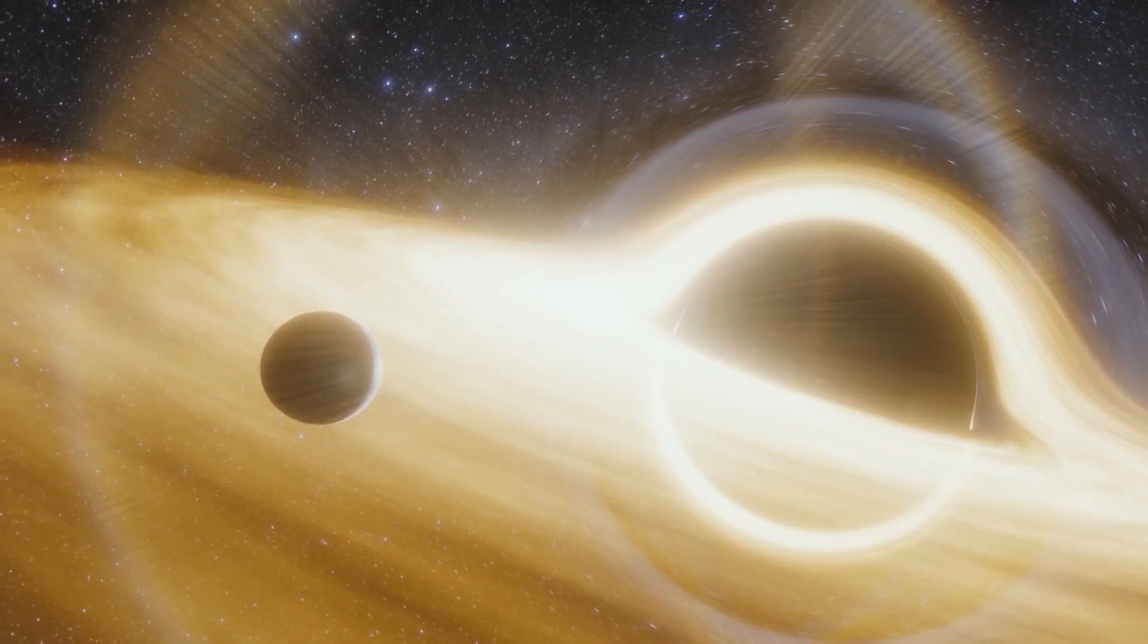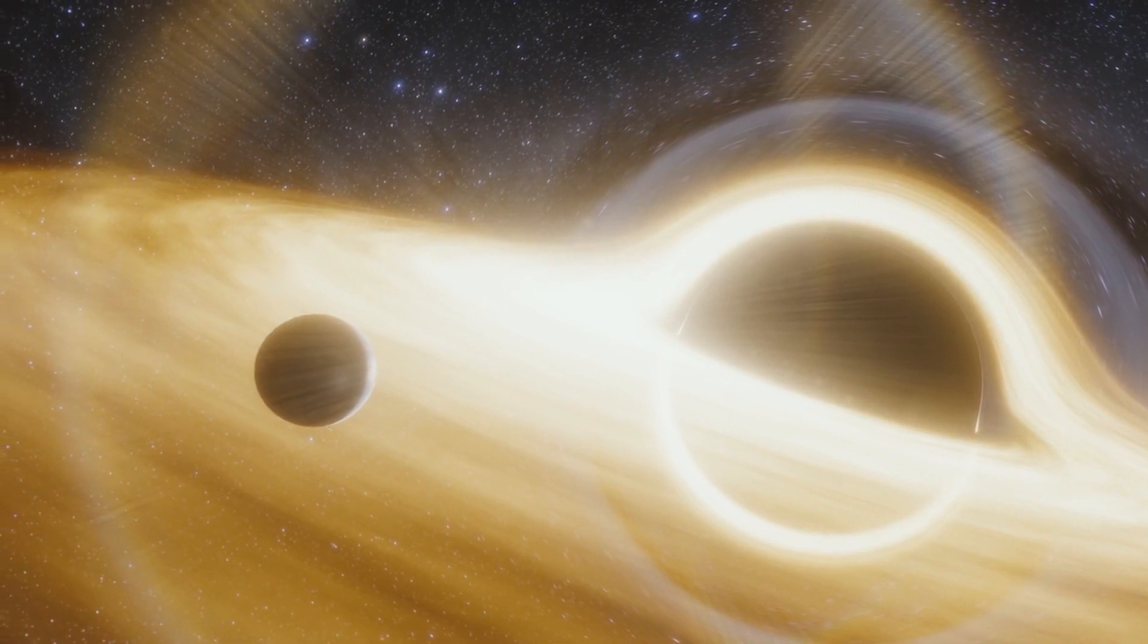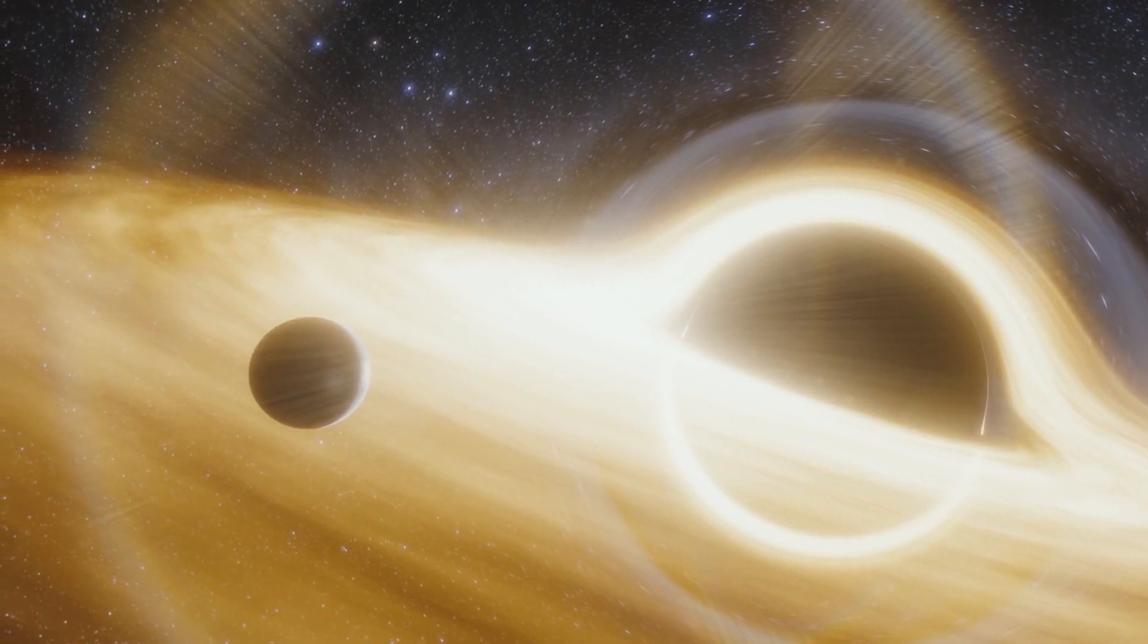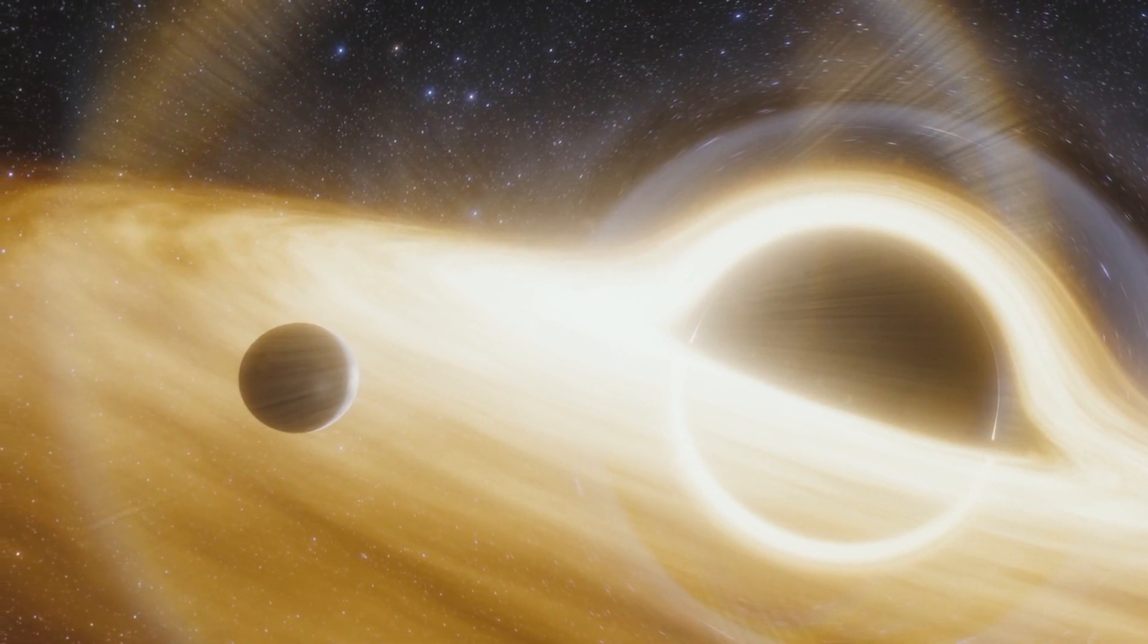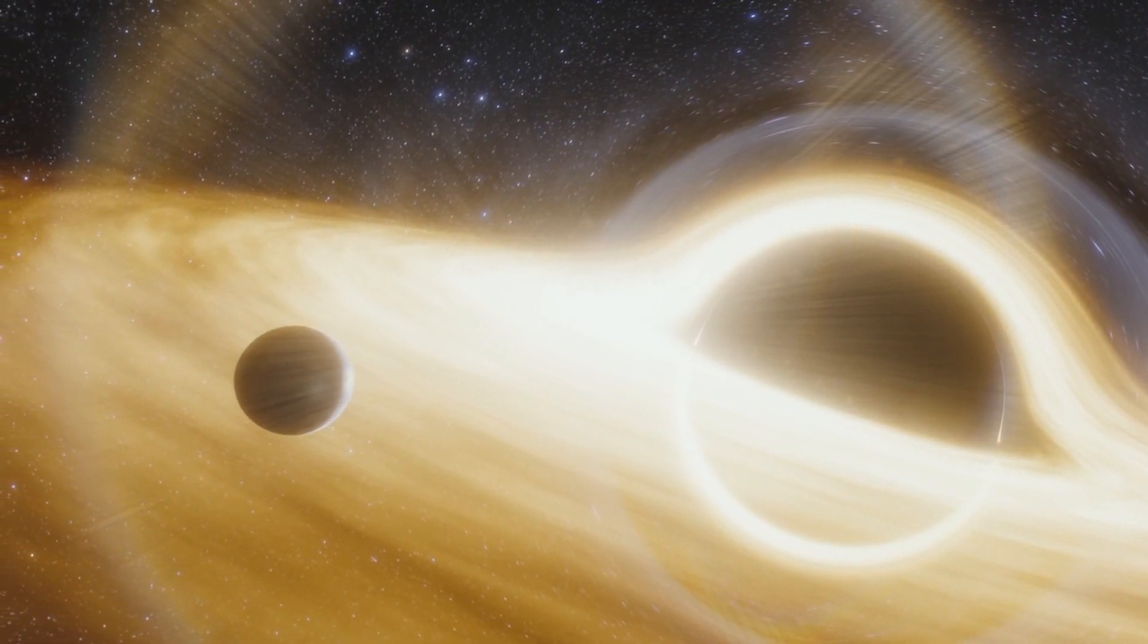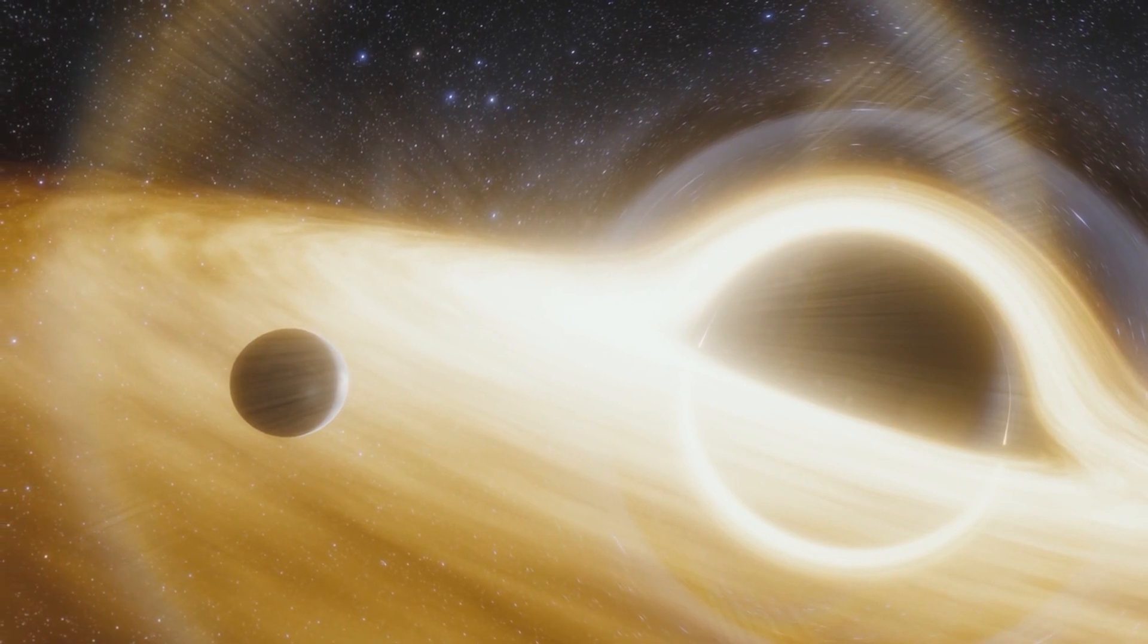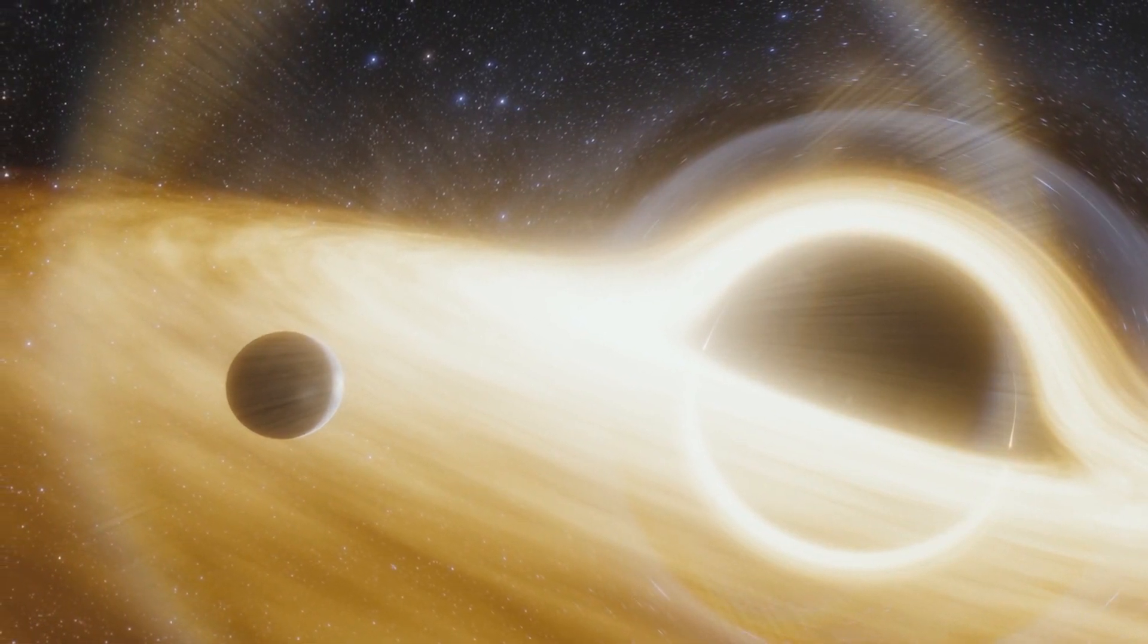General relativity predicts several phenomena that were later confirmed, such as the bending of light by gravity, gravitational lensing, the precession of the orbits of planets, notably Mercury's orbit, the gravitational red shift of light, and the existence of black holes.